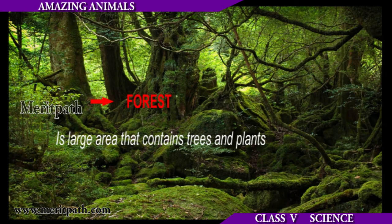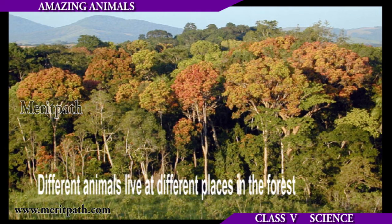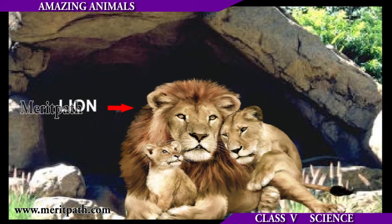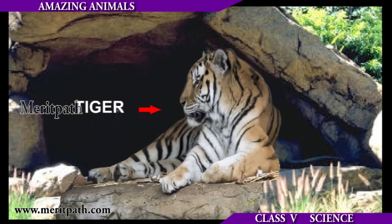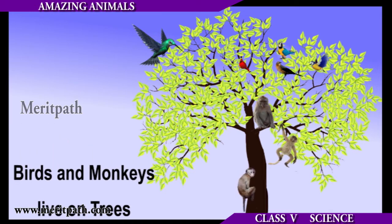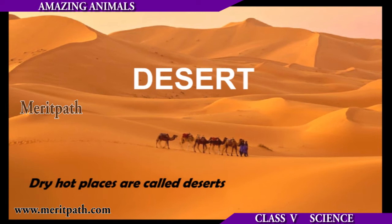A forest is a large area with trees and plants. Different animals live at different places in the forest. Lions and tigers live in caves, while birds and monkeys live on trees.